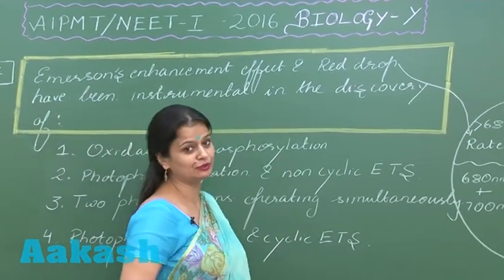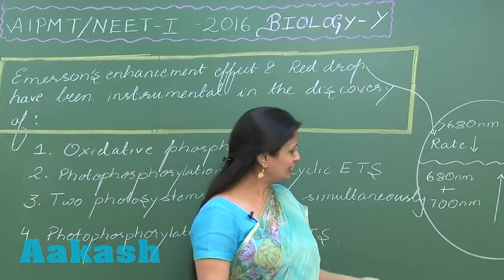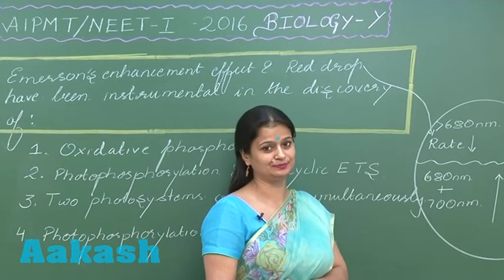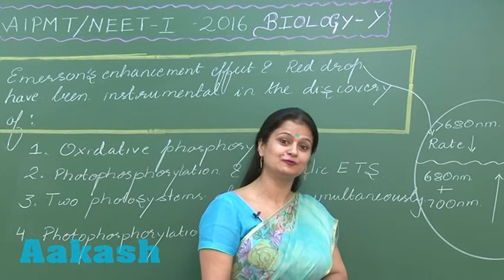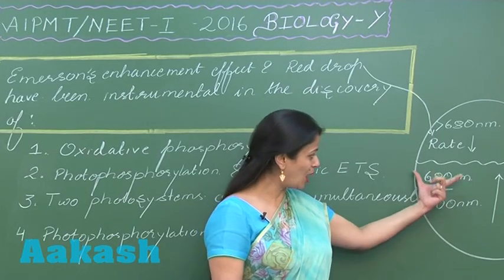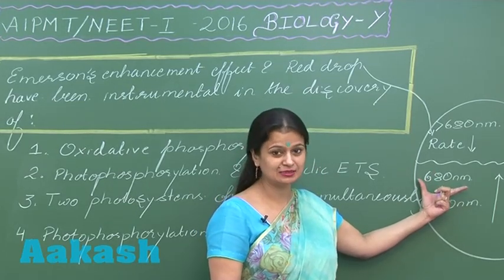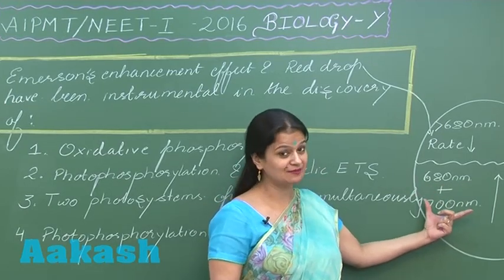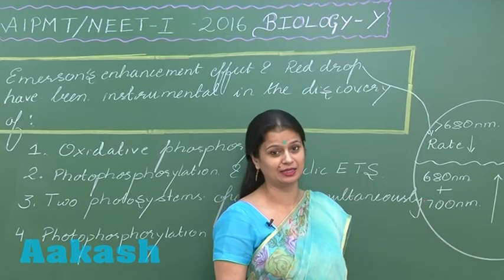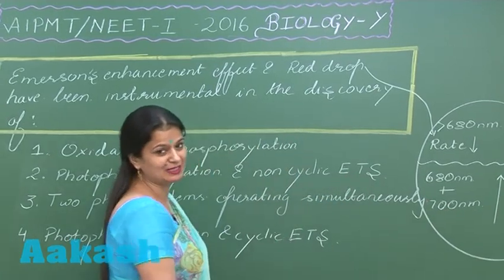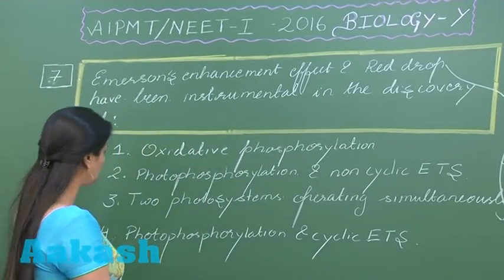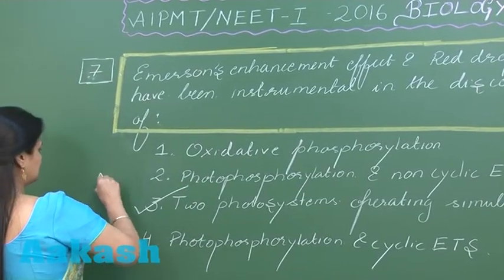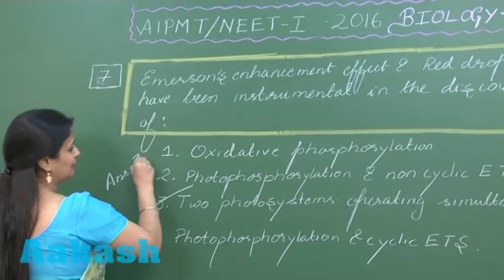From this we can conclude that in photosynthesis there is involvement of two photosystems — one activated at 680 nanometers, which is Photosystem 2, and another activated at 700 nanometers, which is Photosystem 1. So the right answer for this question is option number three.